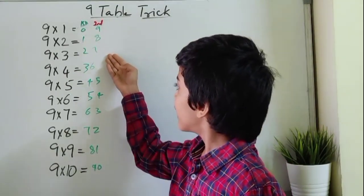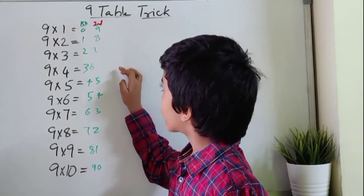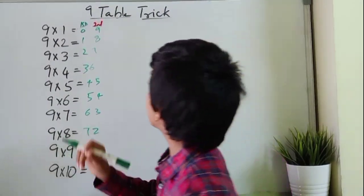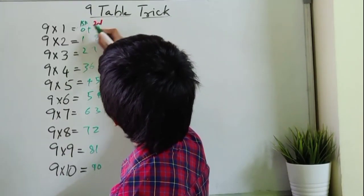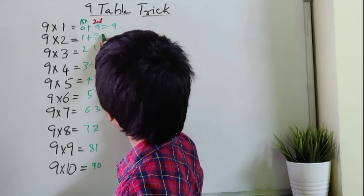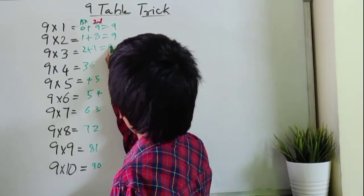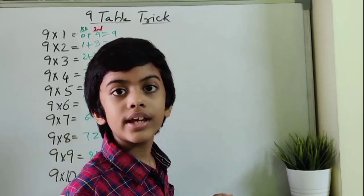If you observe here you can see the sum of digits is always equal to 9. Like 0 plus 9 equals 9, 1 plus 8 equals 9, 2 plus 7 equals 9, and so on.